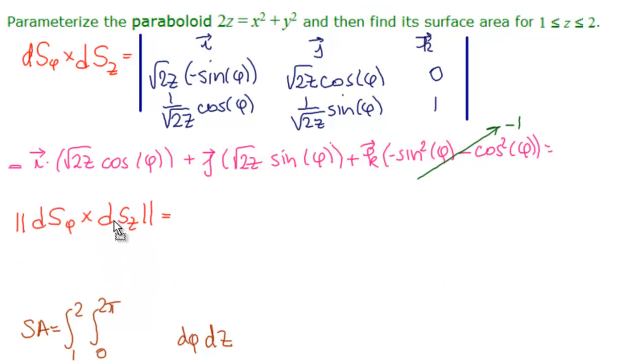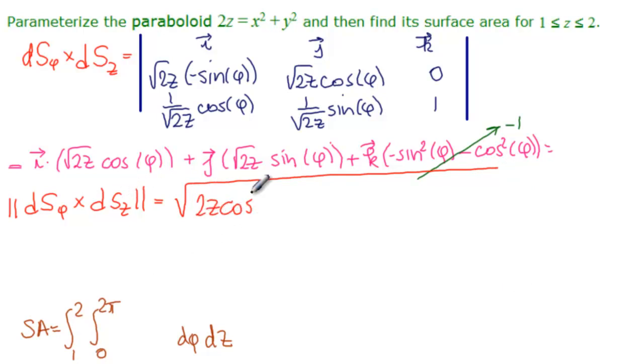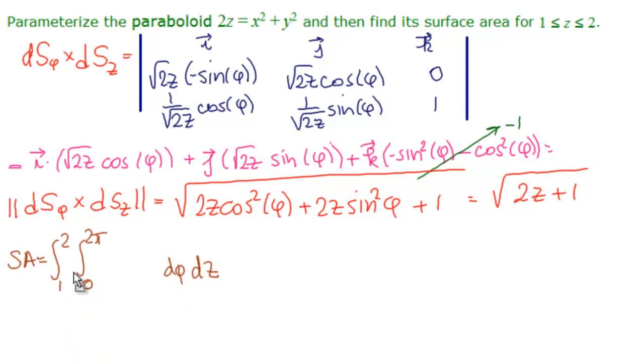So now let's move this up and find the intensity of this vector. So we need the square root. And what do we have here? We have 2z cosine squared of phi plus 2z sine squared of phi plus minus 1 squared. So 1 equals the square root. And this is just 2z plus 1. So now we're ready to do our surface integral here and 2z plus 1 in here.